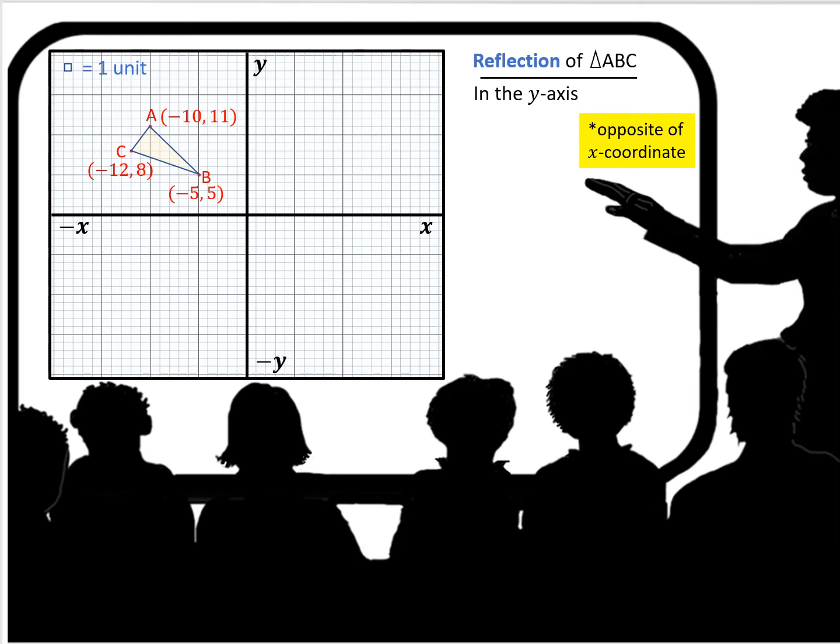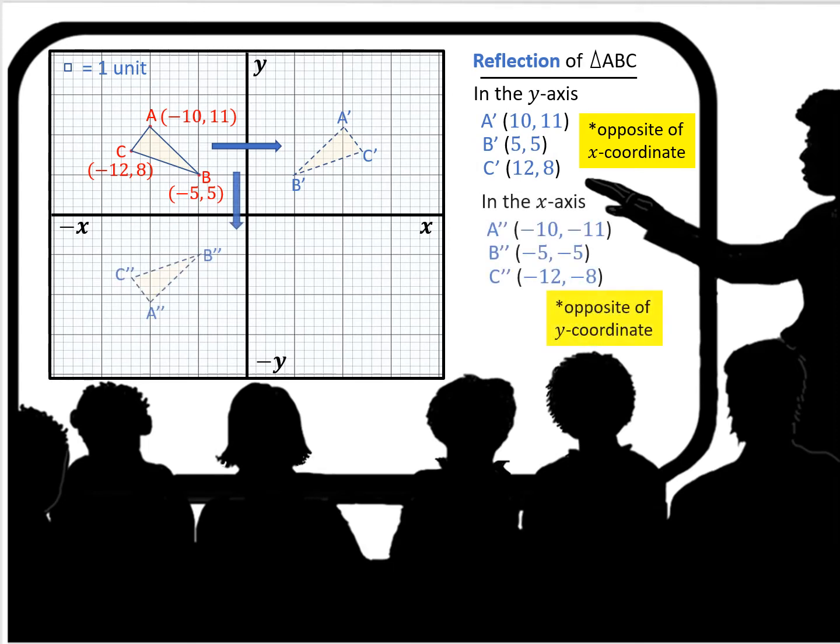Here we're going to look at a reflection of triangle ABC in the y axis. In the y axis, you're going to take the opposite of the x coordinate. So the y coordinate would be the same, but the x coordinate, you're going to take the opposite of it, which would be if it's negative, then it would be positive. If it's positive, it would be negative.